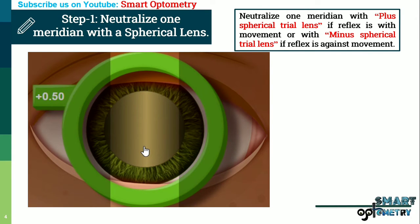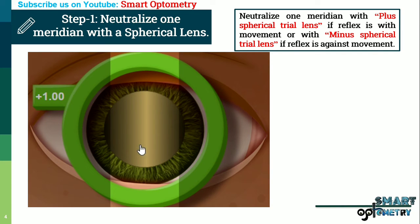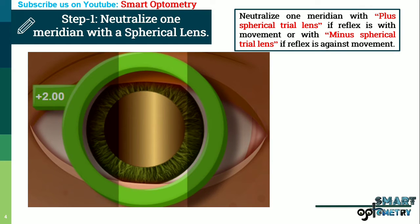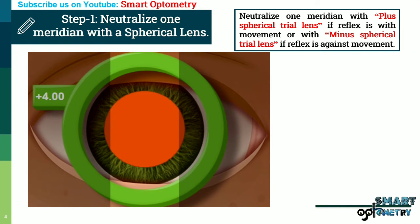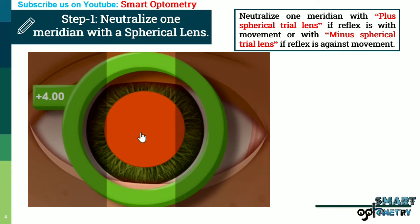We add plus 0.50 and movement is still with, so we increase power. With plus 1, 1.5, 2, 2.5, and 3 it is still with movement. With plus 3.5 it is still with. Finally, with plus 4 this meridian is neutralized. We write this power in the optical cross — the 90-degree axis gives a power of plus 4, which is written 90 degrees apart in the horizontal meridian.